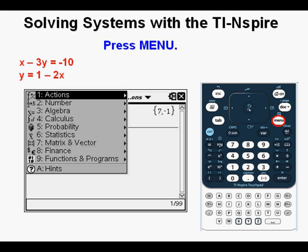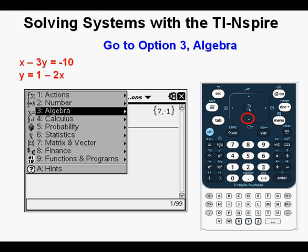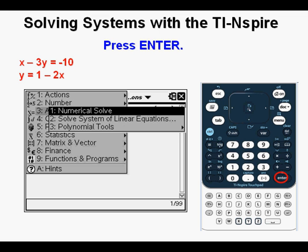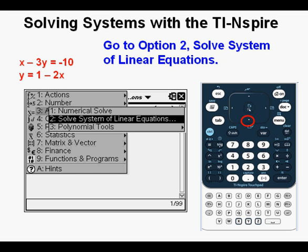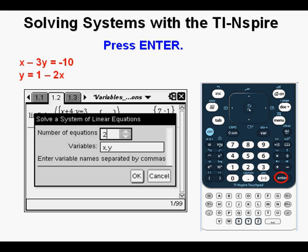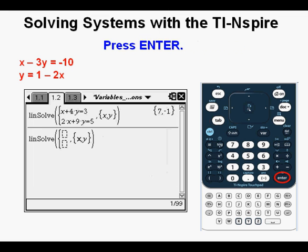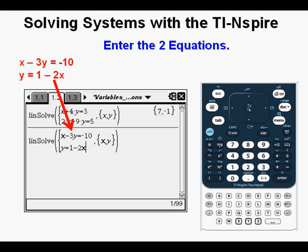Press the Menu key. Go down to Option 3, Algebra. Press Enter. Go down to 2, Solve System of Linear Equations. Press Enter. We have the default value of 2 equations with variables of x and y, so we tab down to the OK button. Press Enter. We enter the two equations without having to change them at all. Press Enter.